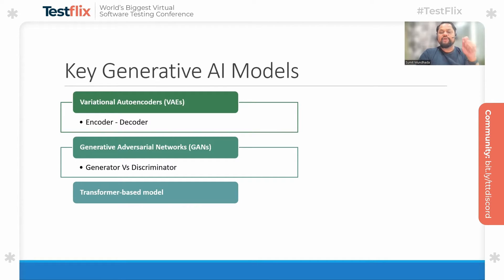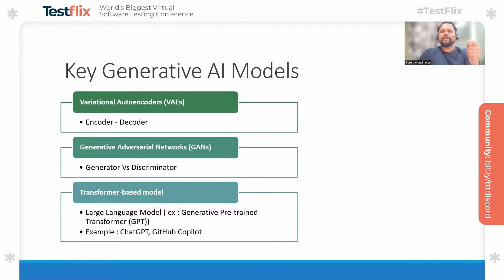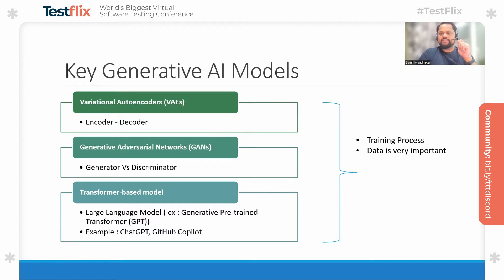Another interesting model for generative AI is the transformer-based model, which uses transformer architecture. The popular model is the large language model, which has the ability to use a vast amount of data. Examples are the generative pre-trained transformer, popularly known as GPT, developed by OpenAI. GPT largely works on natural language processing — examples are ChatGPT and GitHub Copilot. It is important to understand the complex nature of training these models; the training process is quite different and data is a crucial part when dealing with generative AI based applications.